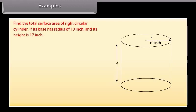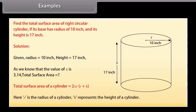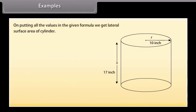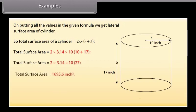Example: Find the total surface area of a right circular cylinder if its base has a radius of 10 inches and its height is 17 inches. Solution: Radius = 10 inches, height = 17 inches, π = 3.14. Total surface area of a cylinder = 2πr(r + h) = 2 × 3.14 × 10 × (10 + 17). Solving this, we get the total surface area = 1695.6 square inches.